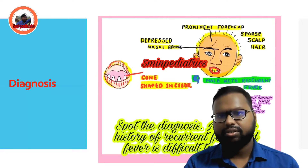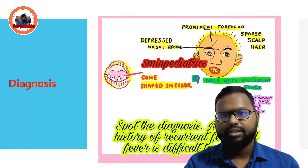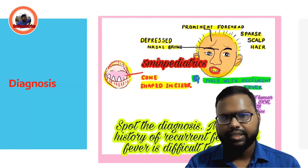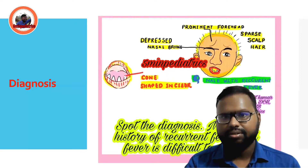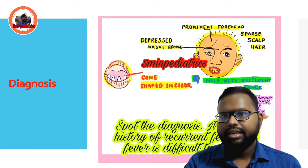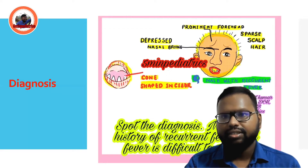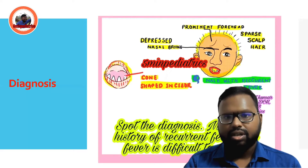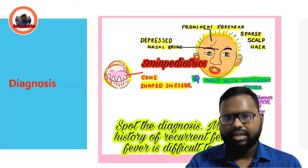A few days back I posted a question on Facebook. The question was related to this picture. You have to identify this condition. The child is having prominent forehead, depressed nasal bridge, conical teeth, sparse scalp hair, and a history of recurrent fever that was difficult to control. So what is the diagnosis?